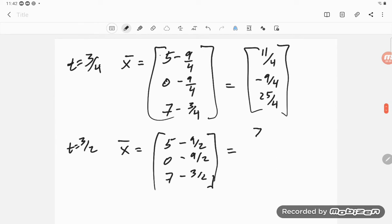And so we get 10/2 minus 9/2, that's 1/2, negative 9/2, and 14/2 minus 3/2 is 11/2. And so there are our two points.